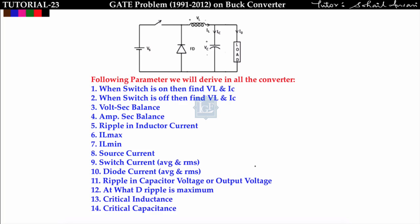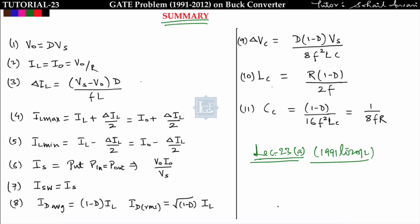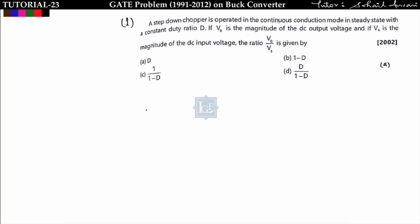In the previous lecture we covered the concept of buck converter and derived parameters from serial number 1 to 14. In summary, the last lecture derived formulas 1 to 11. In this lecture, lecture number 23A, we will solve some problems that have been asked in previous year Gate exams from 1991 to 2012 based on buck converter.